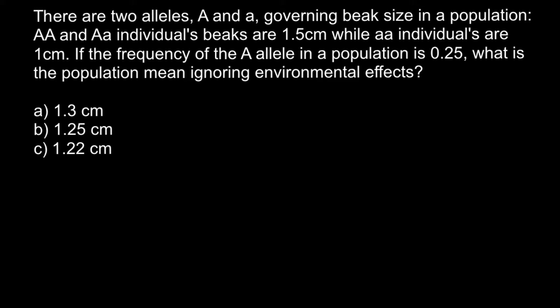In order to solve this problem, everything we need to know is the Hardy-Weinberg formula. Knowing the frequency of two alleles in the gene pool, we can find the frequency of each genotype and phenotype in a population. F stands for the frequencies of three genotype groups, and here is the formula: P² + 2PQ + Q² = 1.